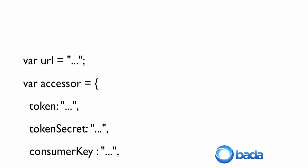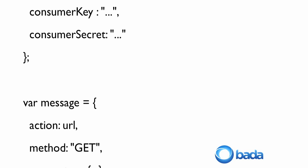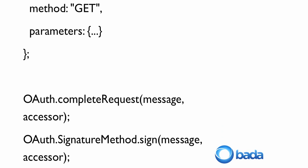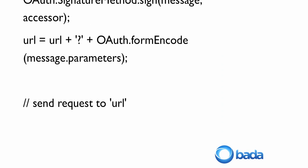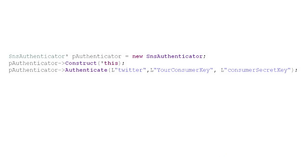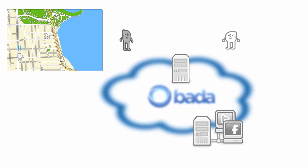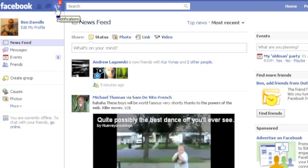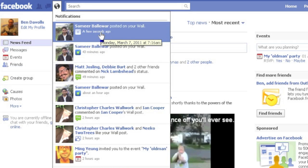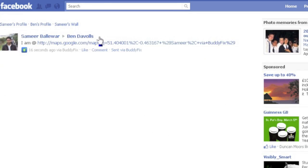For example, here's the JavaScript code you'd need to write to verify your Twitter account using the OpenAuthentication method. And here's the much simpler code using Bada's SNS Gateway APIs. BuddyFix makes use of the SNS Gateway functionality to post a private message which contains a Google map URL of your current location on a friend's Facebook wall. This Facebook integration is the feature which works across platforms since Facebook is available for most smartphones.